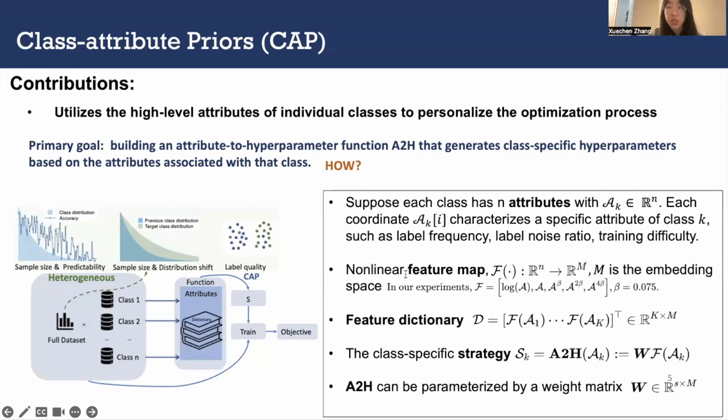Suppose there are total N attributes. Each Ai is one specific attribute. We will use a nonlinear feature map F, which is a set of functions. With function F and attribute A, we could get the feature dictionary.